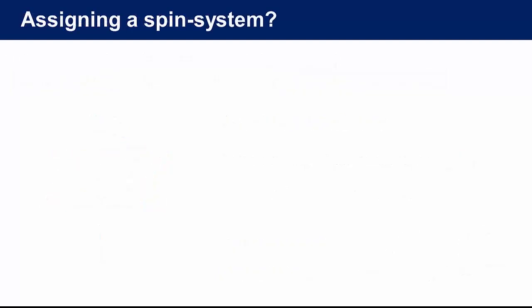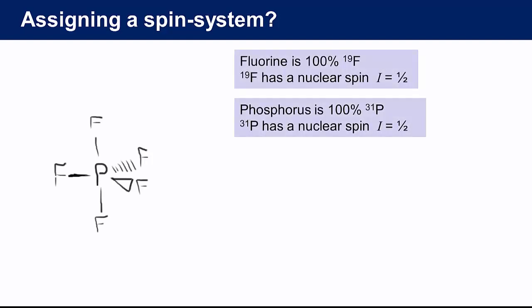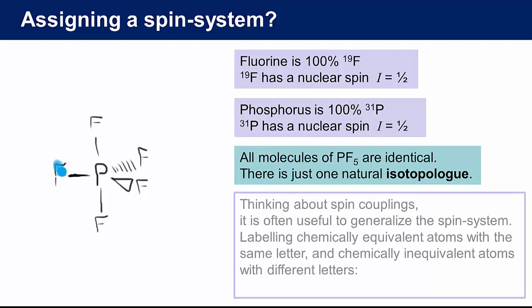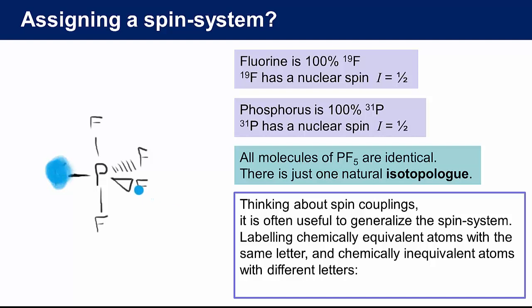We should remember that magnetic nuclei can couple to one another giving some fine structure to our NMR signals. These couplings cause a splitting pattern that depends upon the number of equivalent nuclei that are nearby and the value of their nuclear spin quantum number. In this case all the atoms in phosphorus pentafluoride have a non-zero magnetic moment. We can describe the molecule by a generalized spin system. In this method chemically equivalent atoms are given the same letter code and chemically inequivalent atoms are given different letters. We use adjacent letters of the alphabet for chemically similar atoms and letters further away for very different ones.